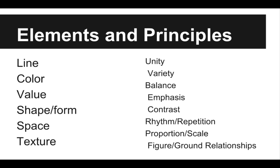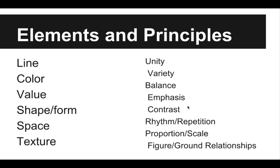We're not going to get into all of that today. The principles of art are unity, variety, balance, emphasis, contrast, rhythm and repetition, proportion and scale, and figure-ground relationships. The elements are the things that work together to actually create a principle. So an artist might use line in order to create repetition, or use color to create contrast or emphasis. The elements and principles are not separate things — they are always present, like a team playing together to get the end goal of a really successful and interesting composition.